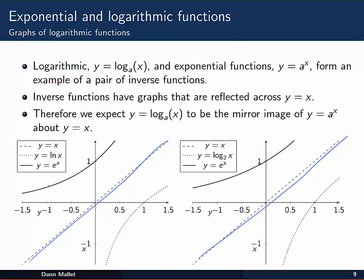Now, inverse function pairs have graphs that are reflected across the line y equal to x. In other words, if we can draw an exponential function, such as the solid line here, which is y equal to e to the x, its mirror image across the line y equal to x, the dotted line, is the graph of the corresponding logarithmic function.